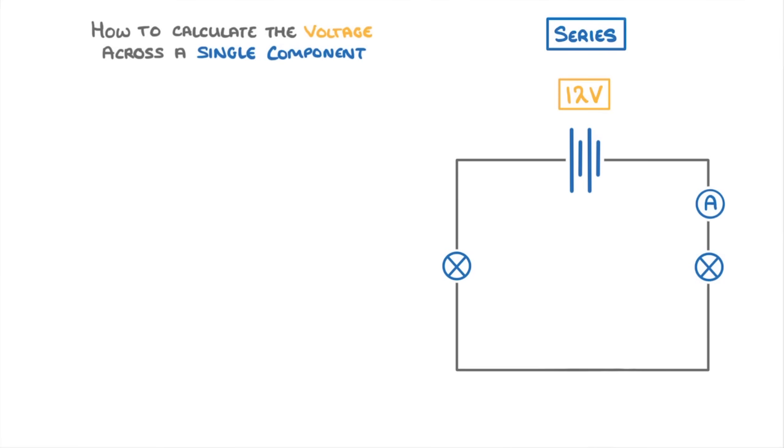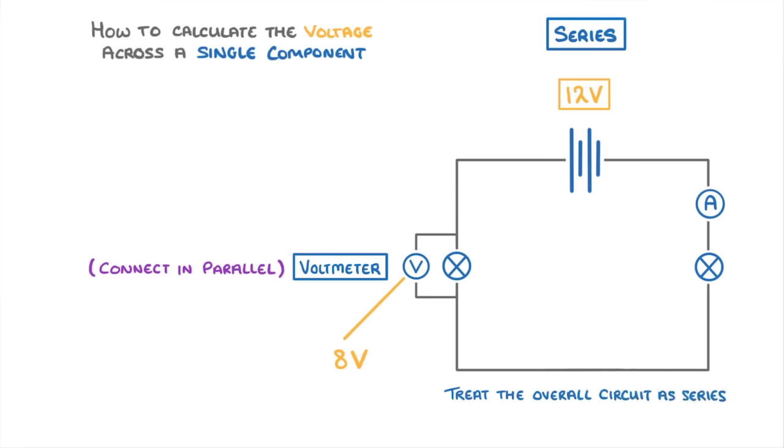Or, if you don't like maths, the final way we can find the voltage is just to use a voltmeter, which we connect in parallel across the component we're looking at. So this one would give us a reading of 8 volts. Even though voltmeters are in parallel, we'd still treat the overall circuit as being series.